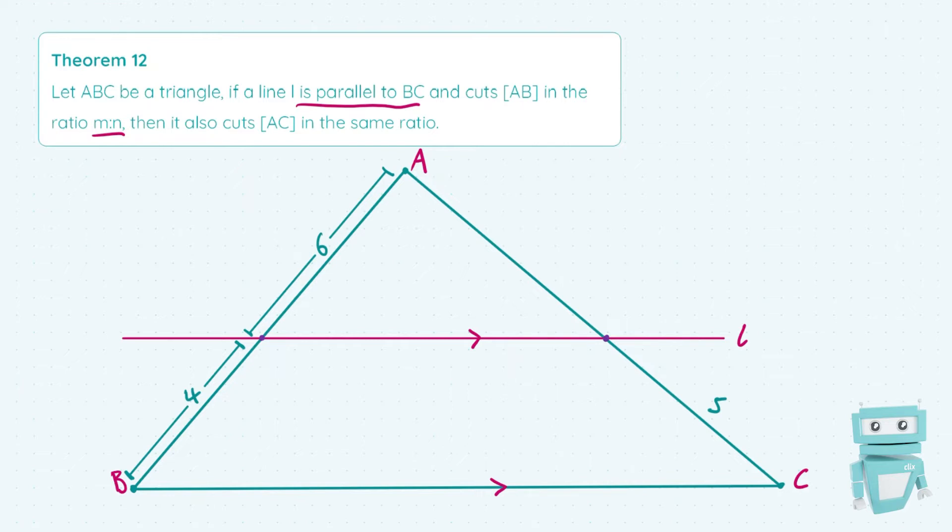As you can see on the left-hand side of the triangle here, we have two lengths: 4 from B to the line where line L cuts AB, and then from that point up to A is the length 6. So in this case, our ratio M is to N, which just represents two numbers, is going to be 4 is to 6.